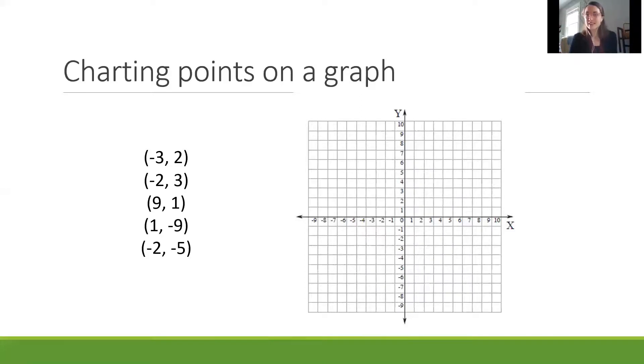We're going to do a little activity together and chart a few points on our graph. First we have negative three, two. I'm going to start at zero—zero, zero is the middle—and I need to go over to negative three. We'll move to the left to the negative three line, then go to positive two. The positives on the y-axis are up, so we'll go up one, two and put a point right there. We have negative three, two on our chart.